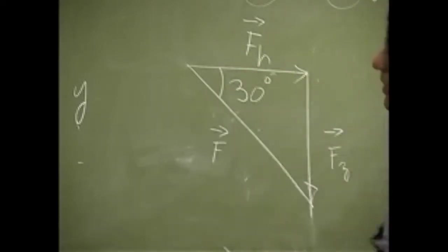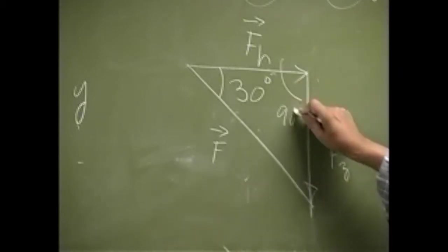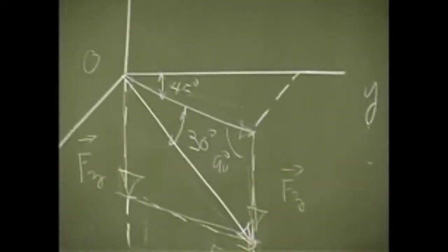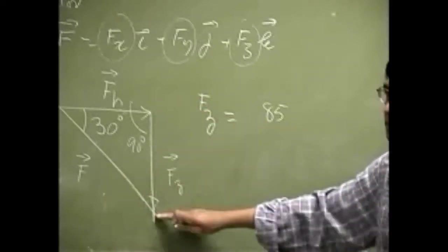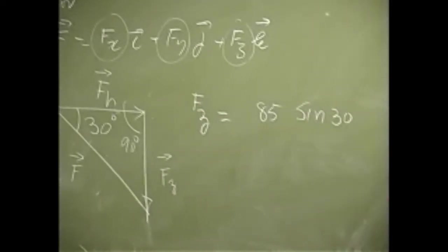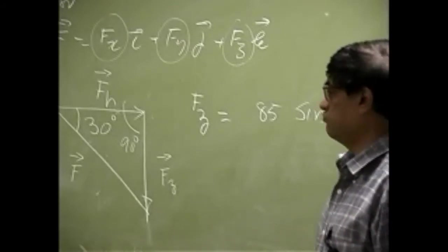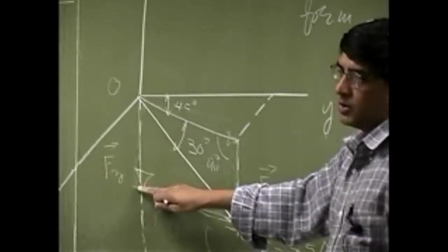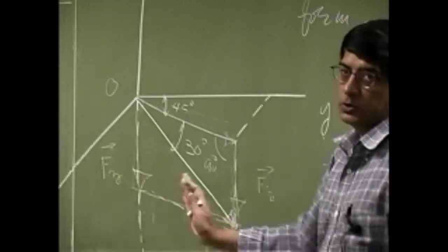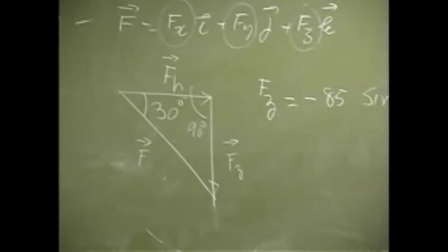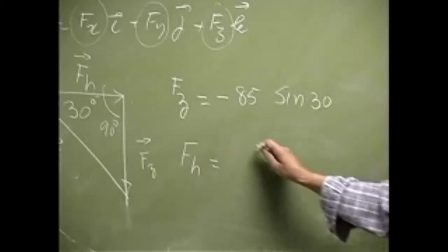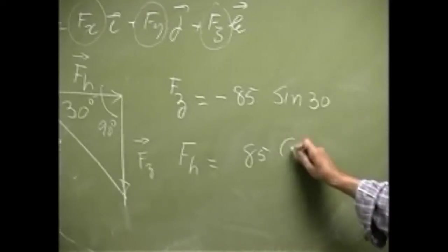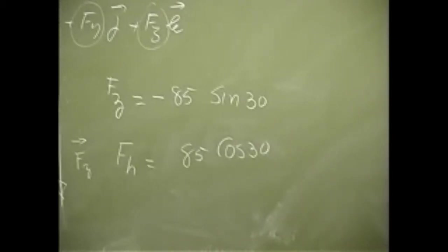This angle here is going to be 30 degrees, and the angle here is 90 degrees. So I can write Fz from the triangle — that will be magnitude 85 times sine 30. The only thing we need to account for is that this z component is going in the negative z direction, so back to the vector form by attaching a negative sign. Then FH, the horizontal component, will be 85 times cosine 30.